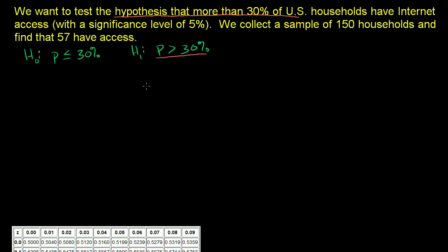The way we're going to do this is we're going to assume a proportion based on the null hypothesis for the population. And given that assumption, what is the probability that 57 out of 150 of our samples actually have internet access? If that probability is less than 5% — less than our significance level — then we're going to reject the null hypothesis in favor of the alternative one.